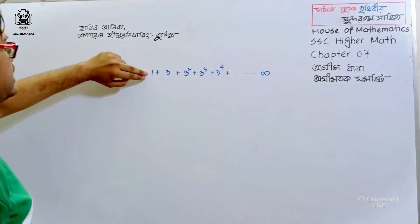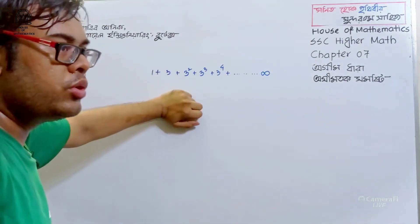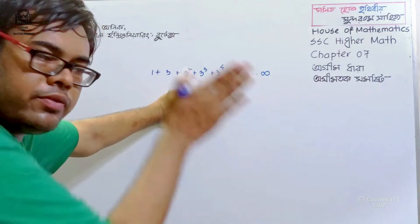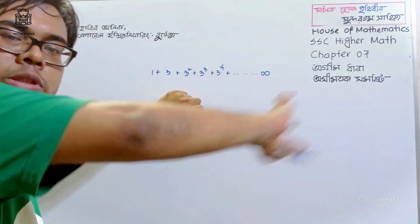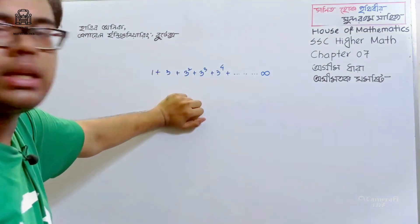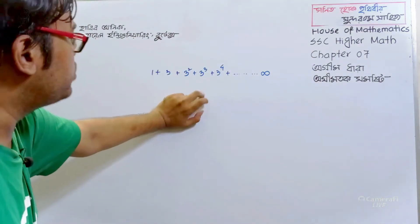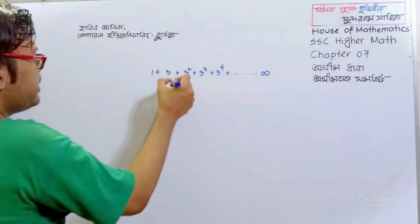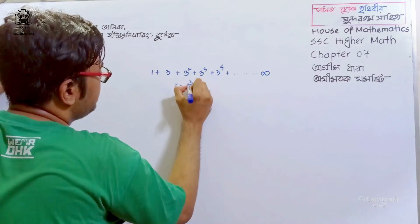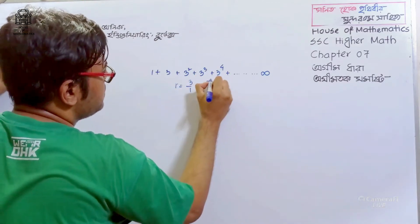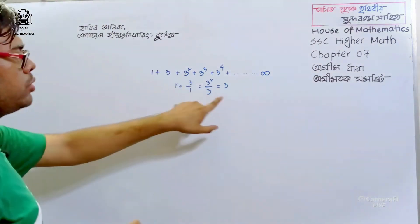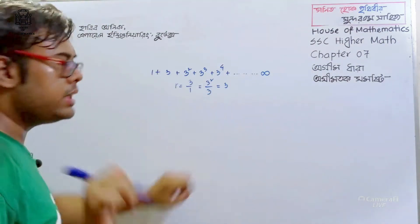We've seen the same thing. The negative side is the infinity part; the positive side is also the infinity part. But this is the same way — 3 divided by 1, 3 squared divided by 3, we get the same ratio.